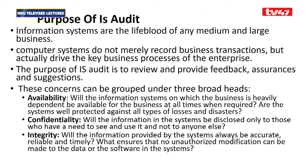If there is interference — unauthorized modification of data or software — such that the output is not correct or reliable, then the information system is not serving its purpose. Currently, many information systems are web-based and cloud-based, operating within organization networks — local area networks, VPNs, and similar infrastructure.